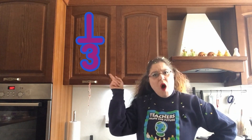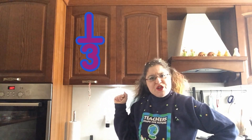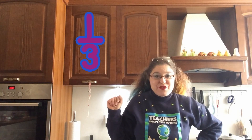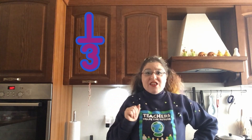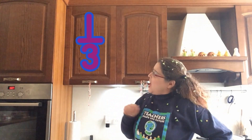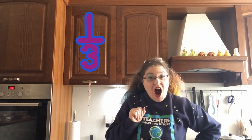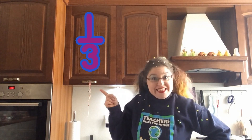Look at how one-third is written. What do you notice? That's right — the top number tells you how many pieces we're looking at, and the bottom number tells you how many pieces there are. So one-third means one piece out of three equal pieces.